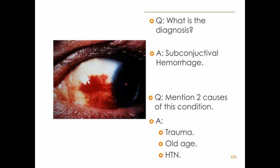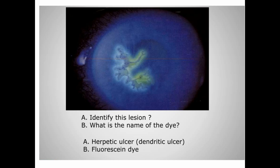Look at this picture — this is a case of subconjunctival hemorrhage; that is the diagnosis. What are the different causes? They include hypertension, old age in which vessels become fragile, trauma, and Valsalva maneuver. How will you manage? Counsel the patient and then give topical steroid drops for two weeks and artificial tear drops for one to two months.